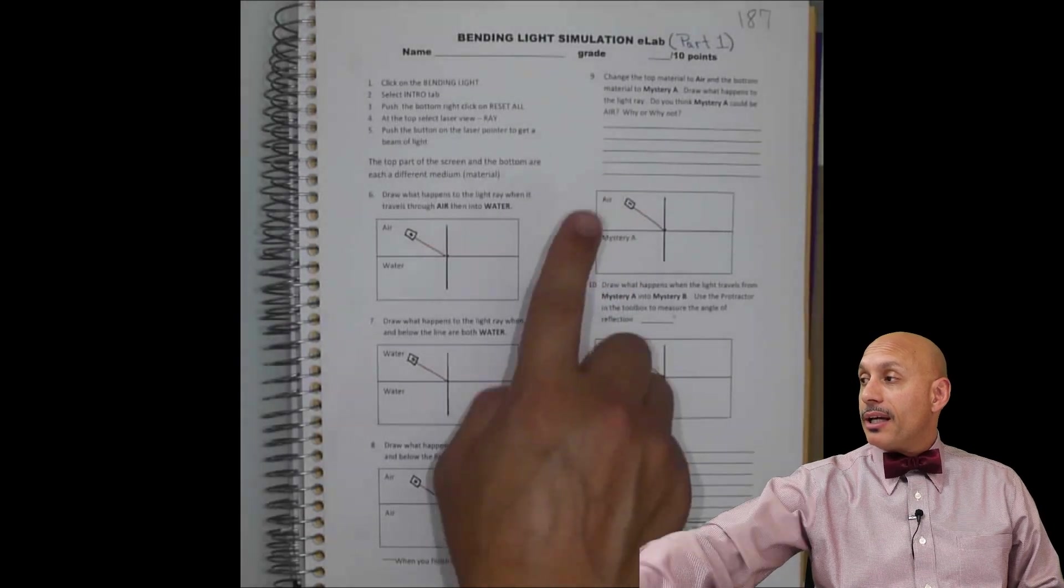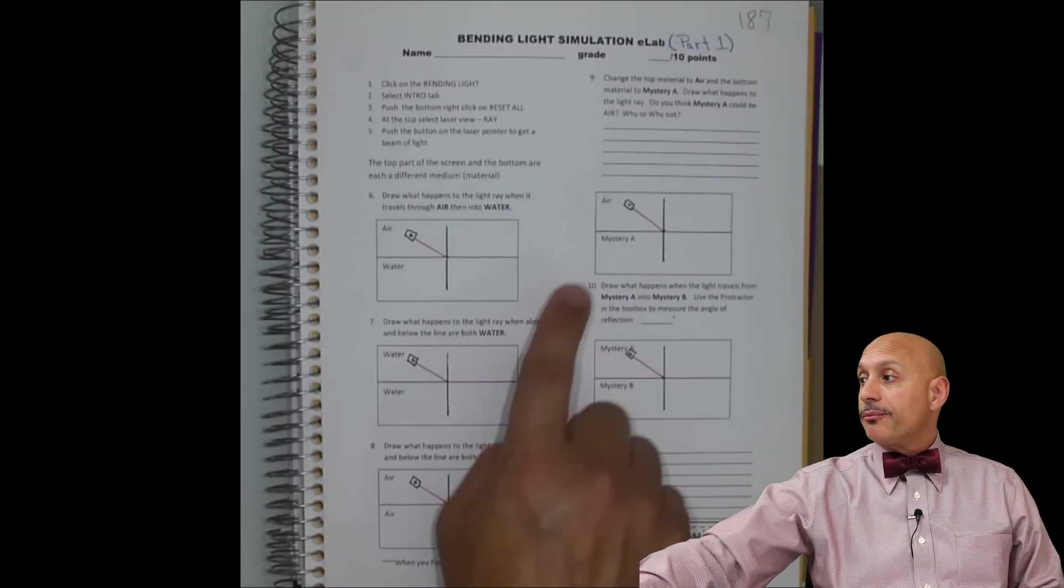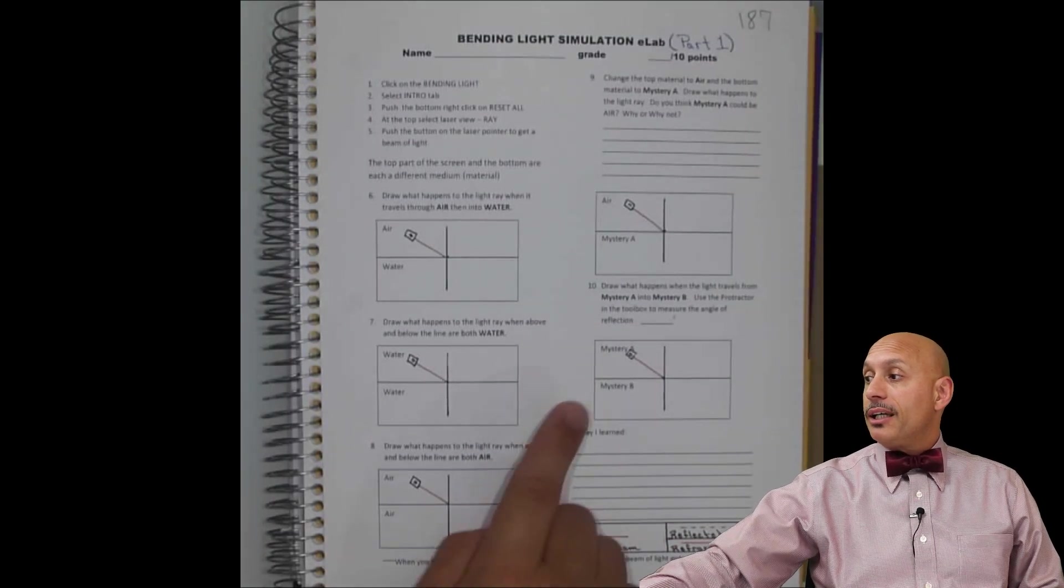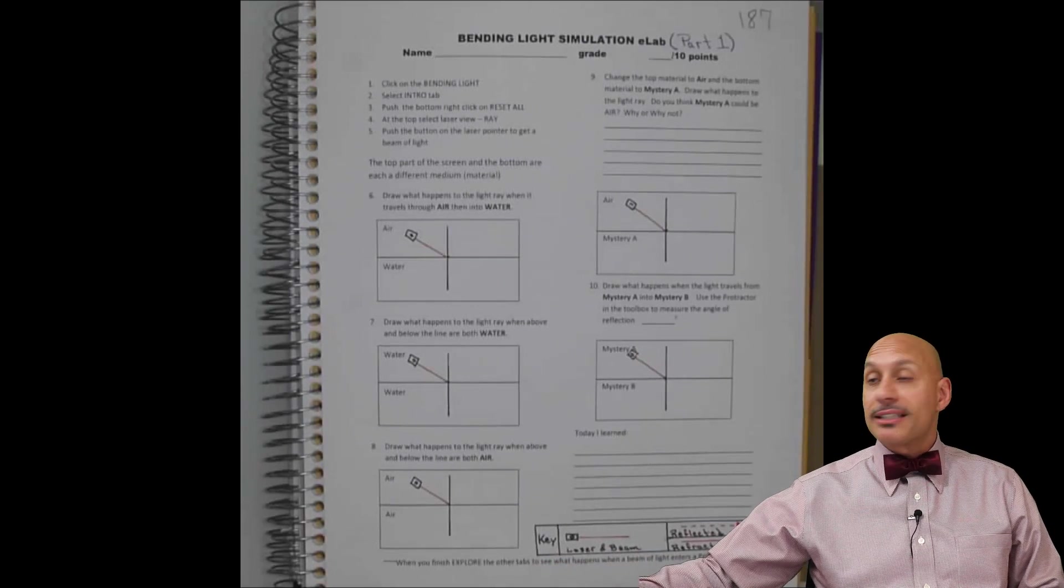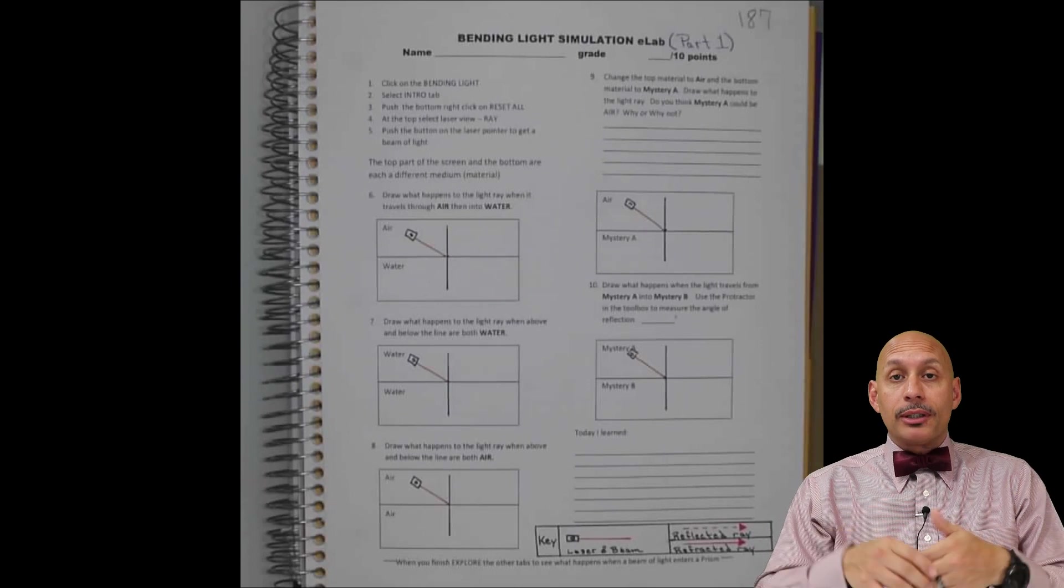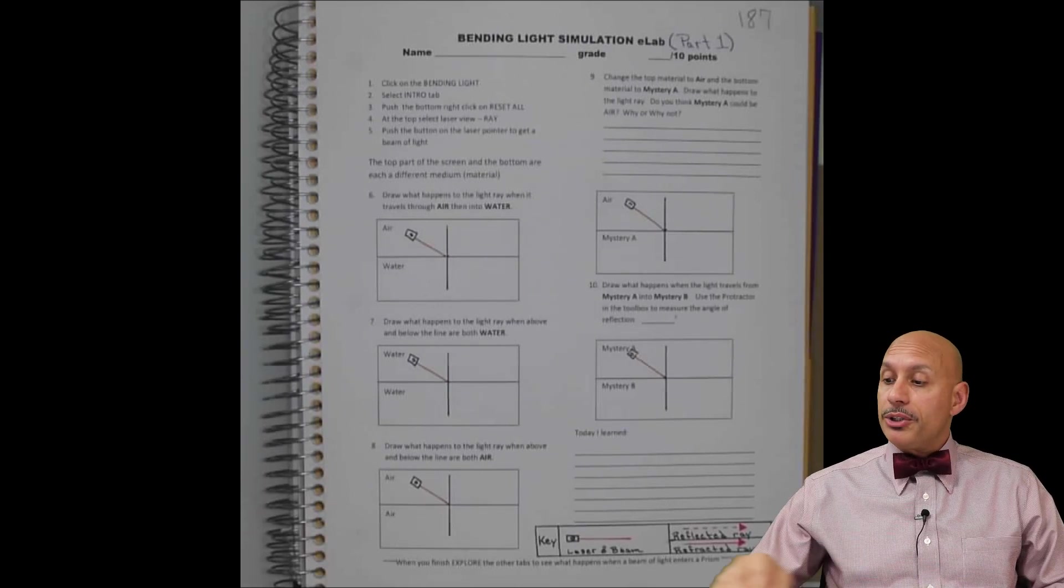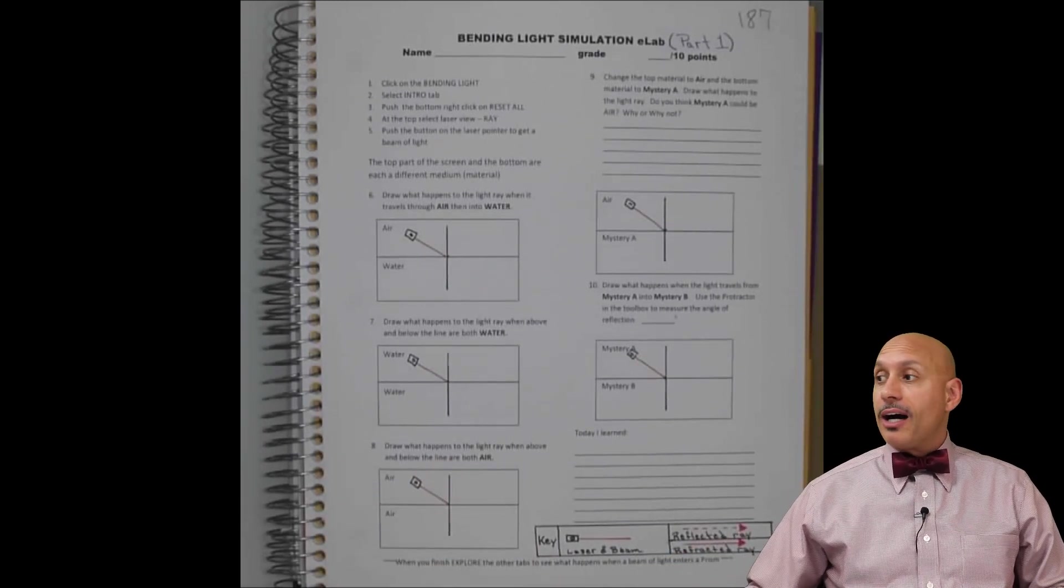Then for number nine, you need space to write another box for number nine and another box for number ten, and then space to write. And then somewhere on the page, you're going to copy this key. So you can do that on a separate sheet of paper or write in your notebook.